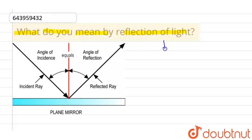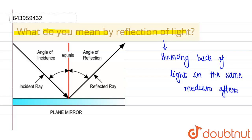So reflection of light simply means bouncing back of light in the same medium after striking with a surface.